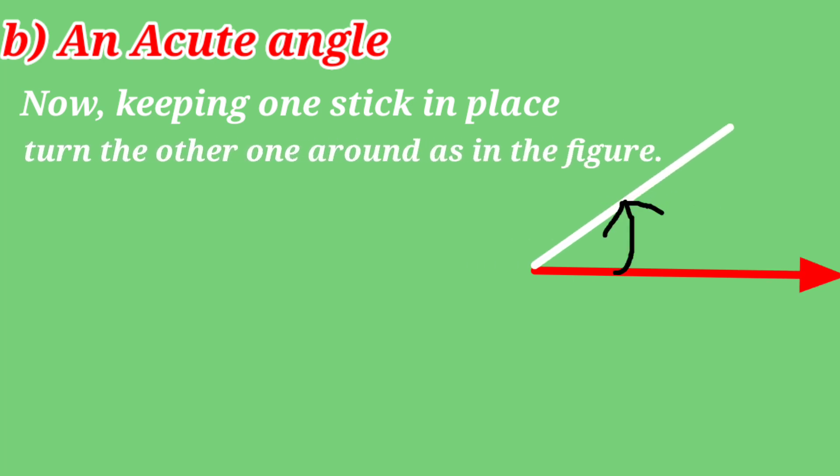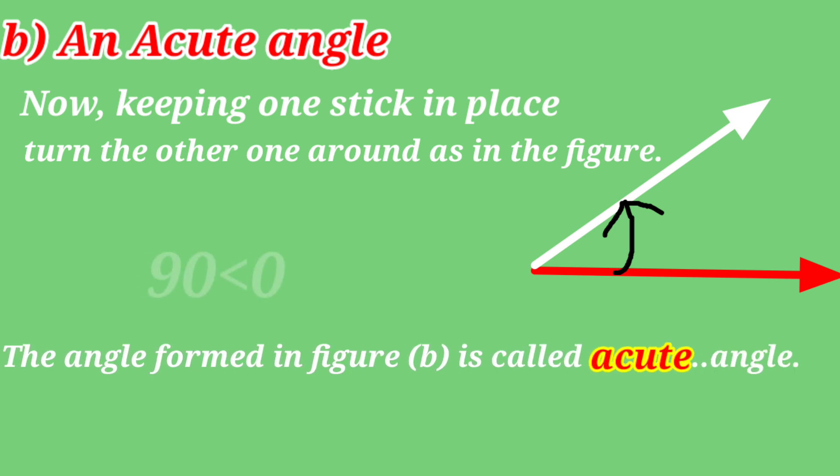An acute angle. Now keeping one stick in place, turn the other one around as in the figure. The angle formed in figure B is called acute angle. It is less than 90 degrees.